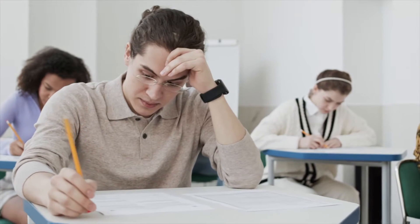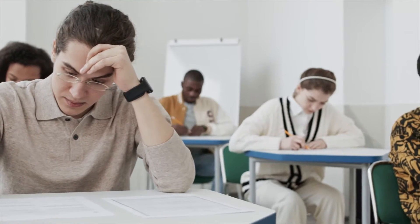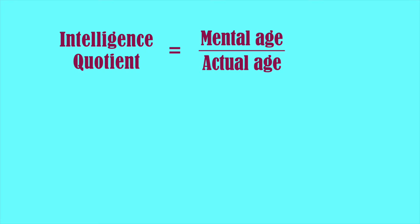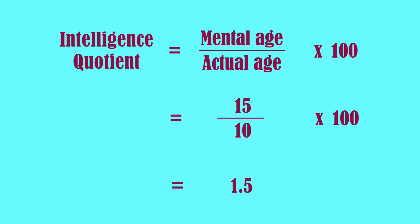Standard tests attempt to measure intelligence using the intelligence quotient, or IQ. This is mental age divided by actual age. So, for example, if someone has a mental age of 15 but their actual age is 10, that's 15 divided by 10, or 1.5. And since IQ is expressed as a proportion of 100, or effectively a percentage, we multiply the result by 100. So far this seems okay, but actually there are problems.